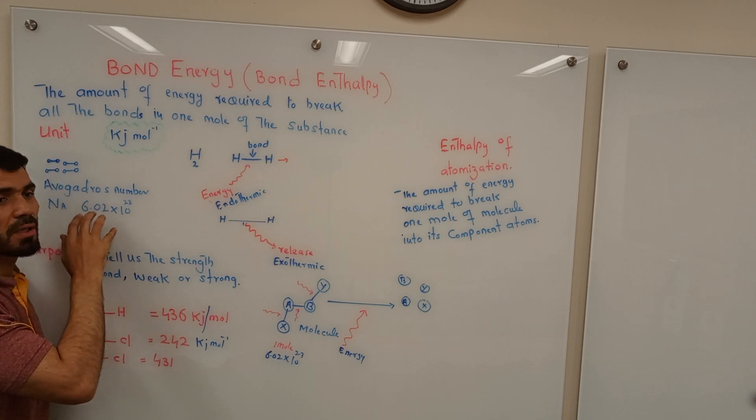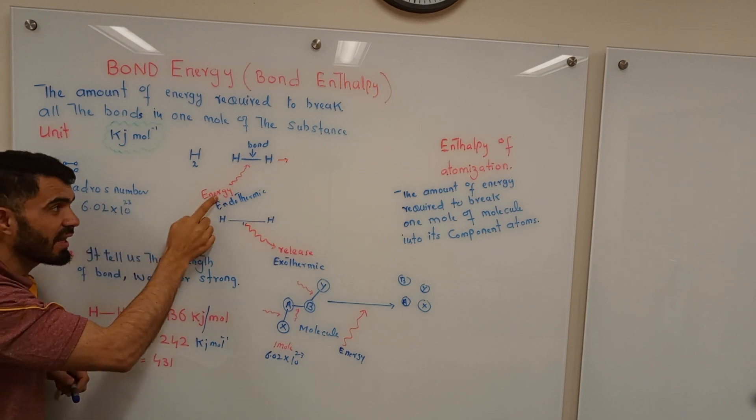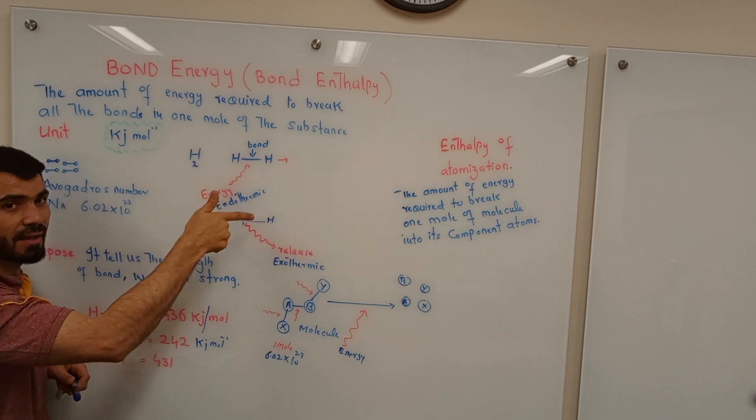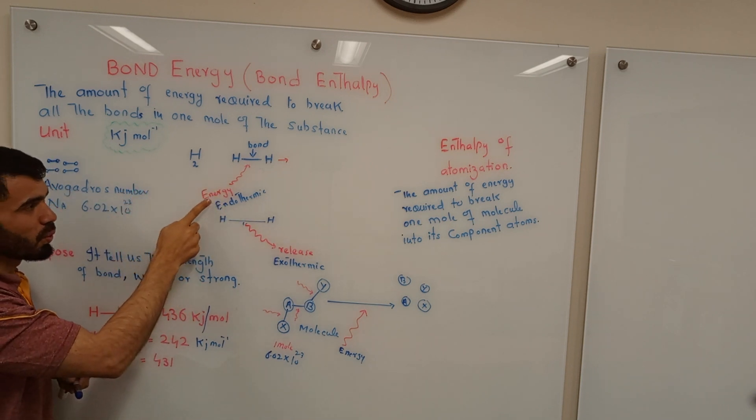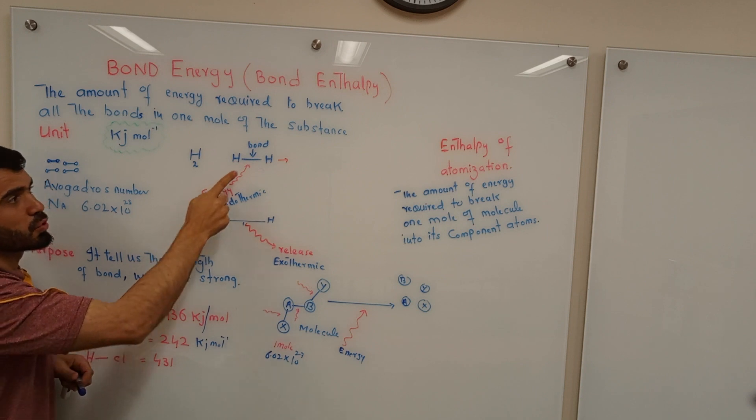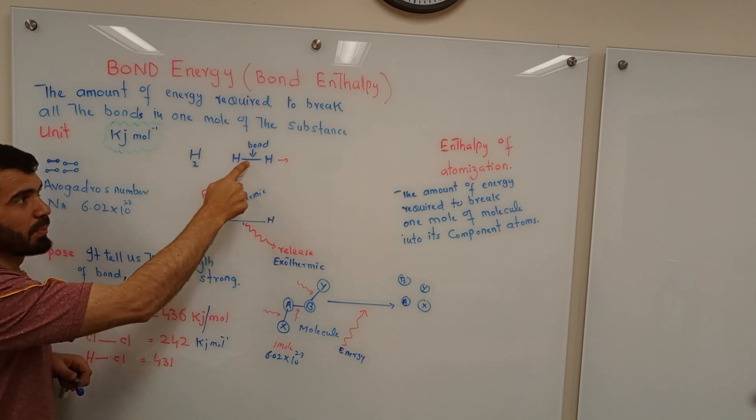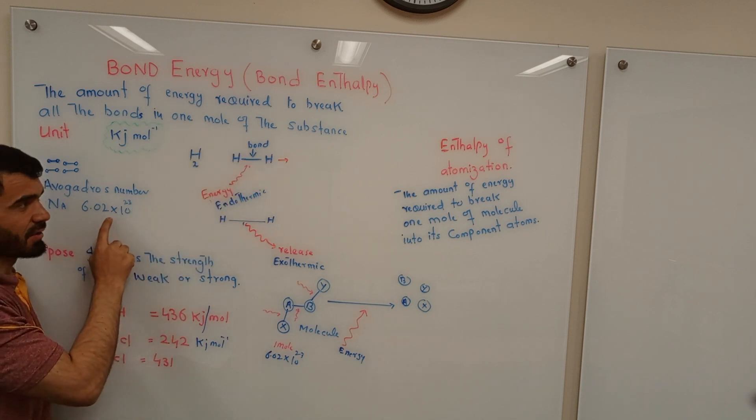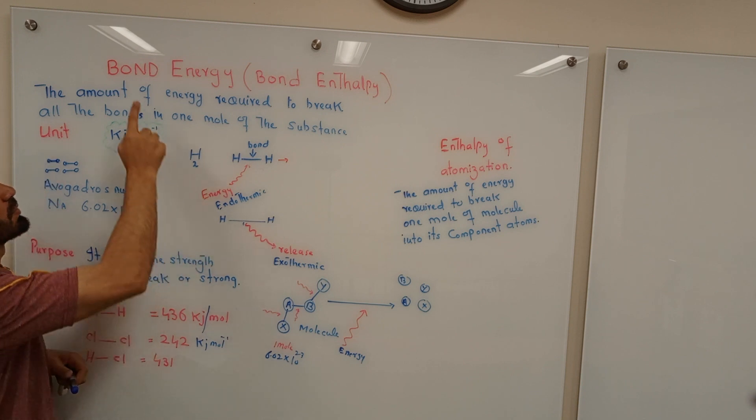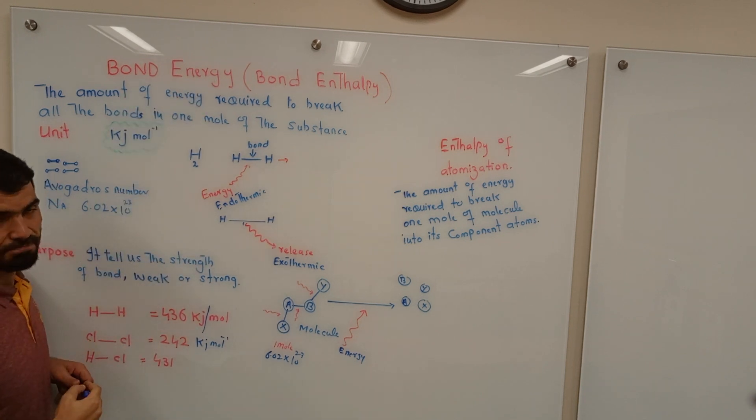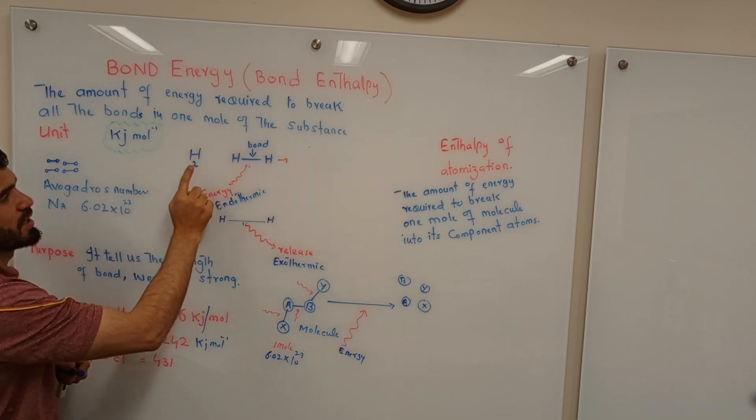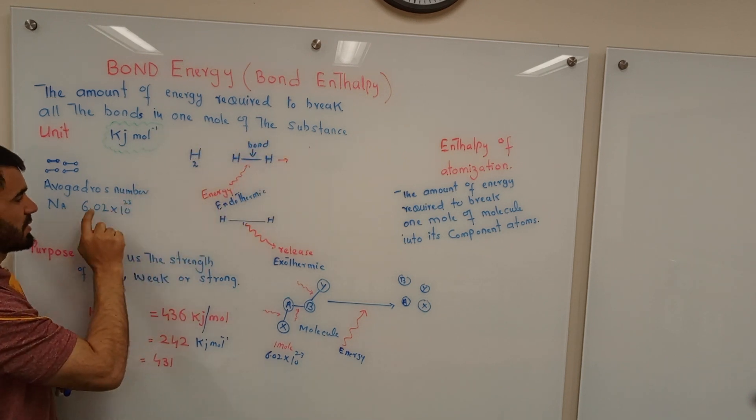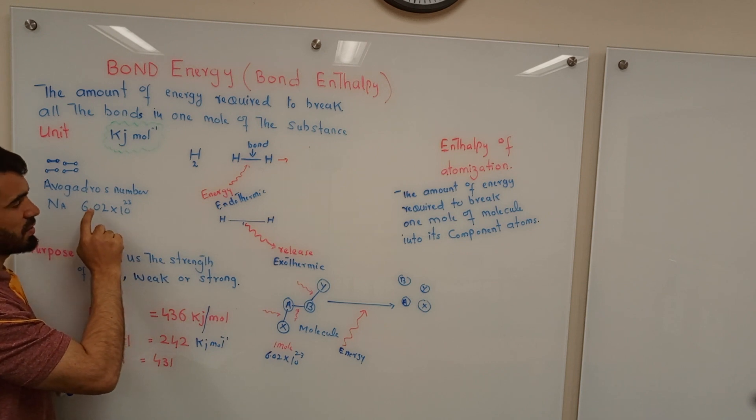So when you take this kind of huge number of molecules and then you provide energy, definitely this time energy would be different. So you provide energy to break all the bonds in these molecules. Then that energy will be required bond energy. So that's why we use one mole of the substance.